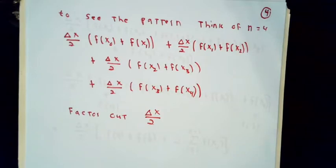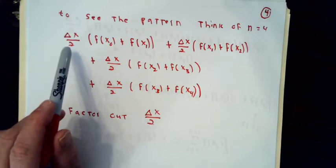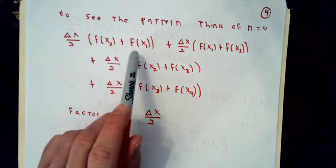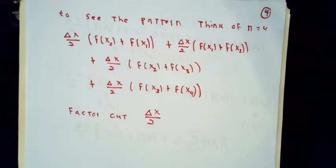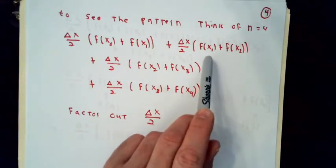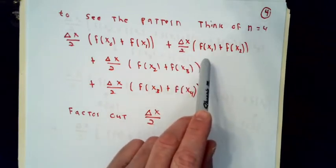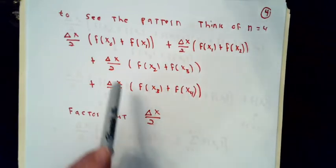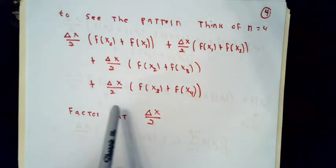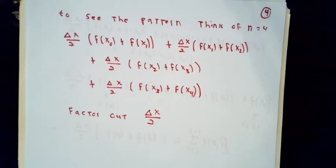Now to see the general pattern of this, I'm going to write out this trapezoid approximation using four subintervals. The first subinterval will contribute delta x over two times f(x0) plus f(x1). The second subinterval begins at x1 and ends at x2, so the contribution I'll get from it is delta x over two times f(x1) plus f(x2). Likewise, we can write down formulas for the contribution to the integral that comes from the third and fourth subintervals.